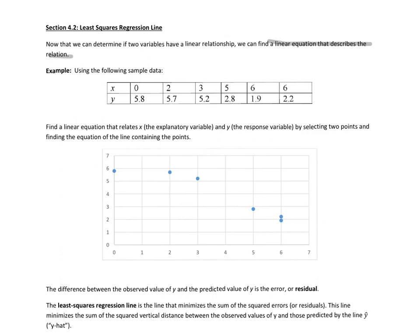Let's look at the following sample of bivariate data with our x, y ordered pairs. We're going to find a linear equation that relates x, the explanatory variable, and y, the response variable, by selecting two points and finding the equation of the line containing the points.